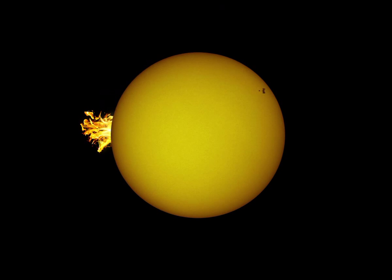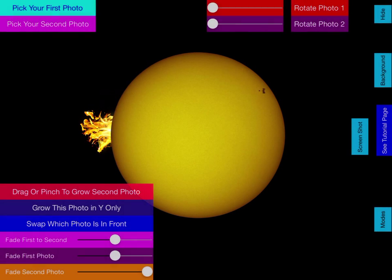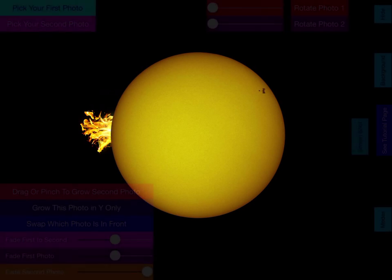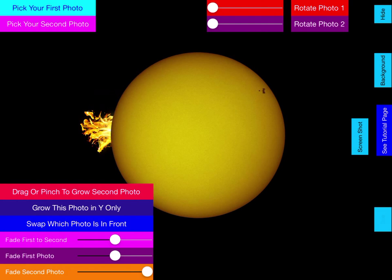And then once you get something that looks interesting, you can easily save it to the camera roll with the screenshot button here. And that removes all buttons and sliders, saves a clean image to your camera roll.